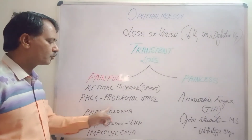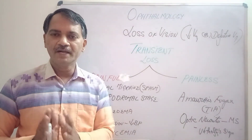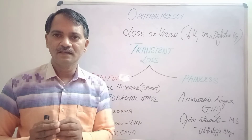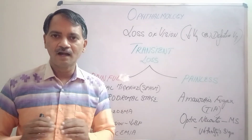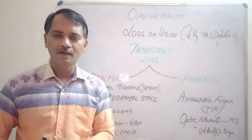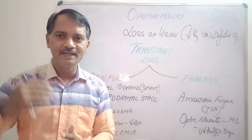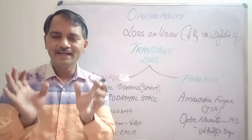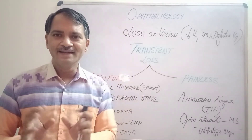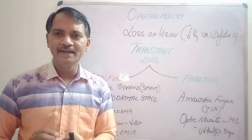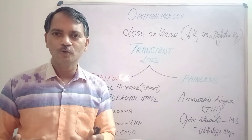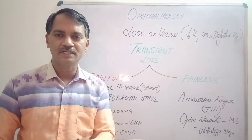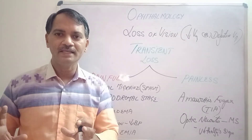Next is primary angle closure glaucoma, prodromal stage. A patient is predisposed to get this glaucoma — the anterior chamber angle is very narrow. When a patient sits in a low-lighted room or goes to a theatre where all the lights are switched off, the pupil naturally dilates. When the pupil dilates, the entire iris moves towards the angle and occludes the outflow of aqueous humor, leading to a sudden rise in intraocular pressure causing redness, pain, and decreased vision. Because of severe pain, redness, and decreased vision, these patients will come out of the theatre.